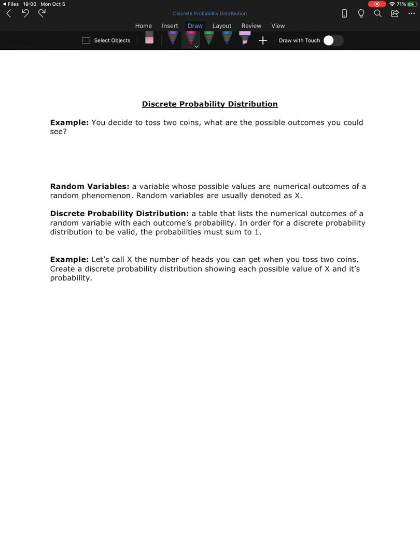So this example says you decide to toss two coins, what are the possible outcomes you could see? So if I toss two coins, I could see two heads, I could see a heads and a tails, I could see a tails and a heads, or I could see two tails.